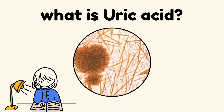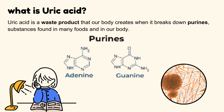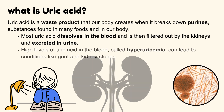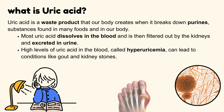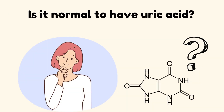What is uric acid? Uric acid is a waste product that our body creates when it breaks down purines, substances found in many foods and in our body. Most uric acid dissolves in the blood and is then filtered out by the kidneys and excreted in urine. High levels of uric acid in the blood, called hyperuricemia, can lead to conditions like gout and kidney stones.